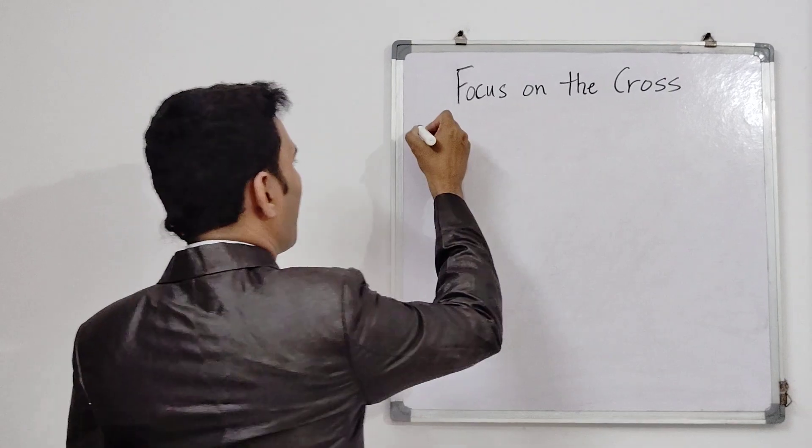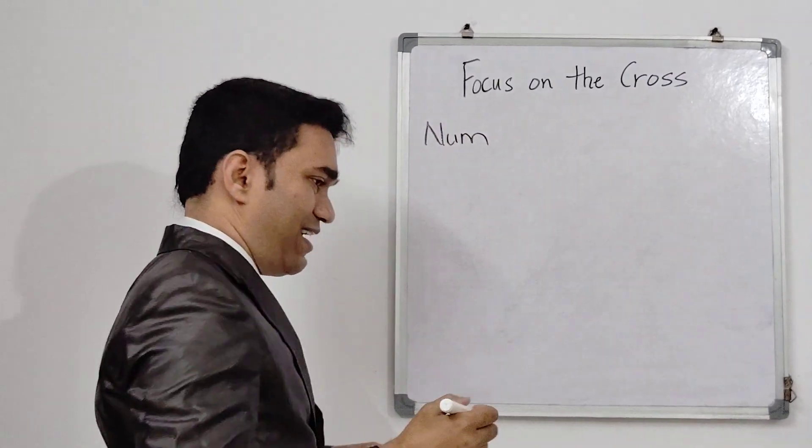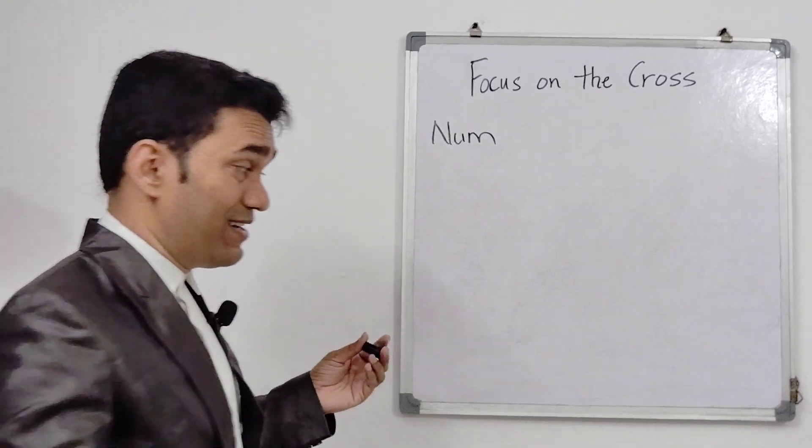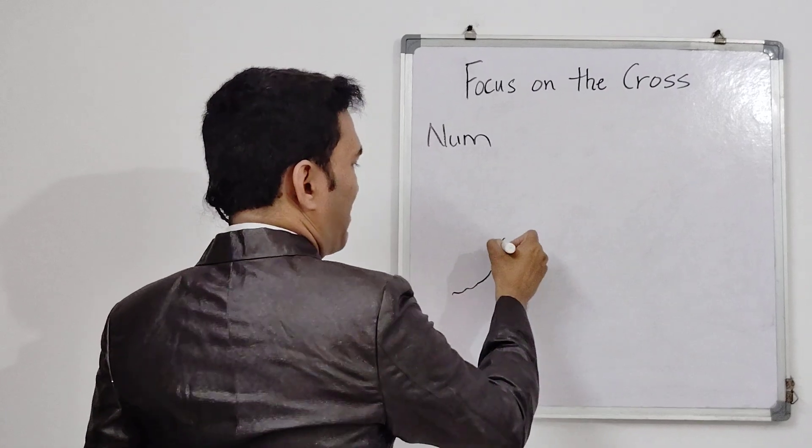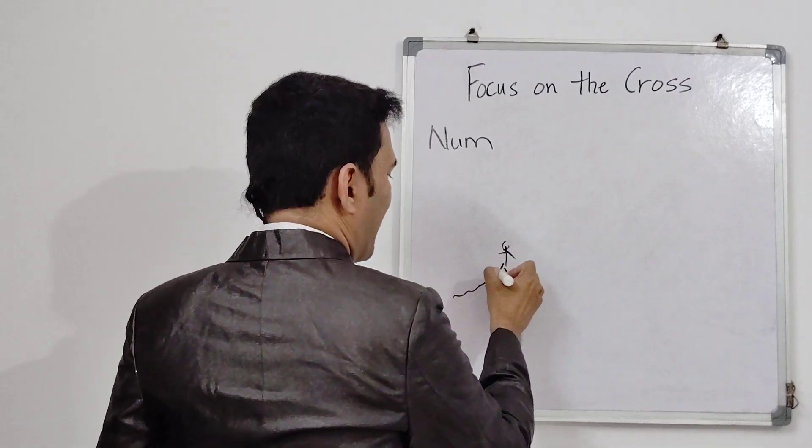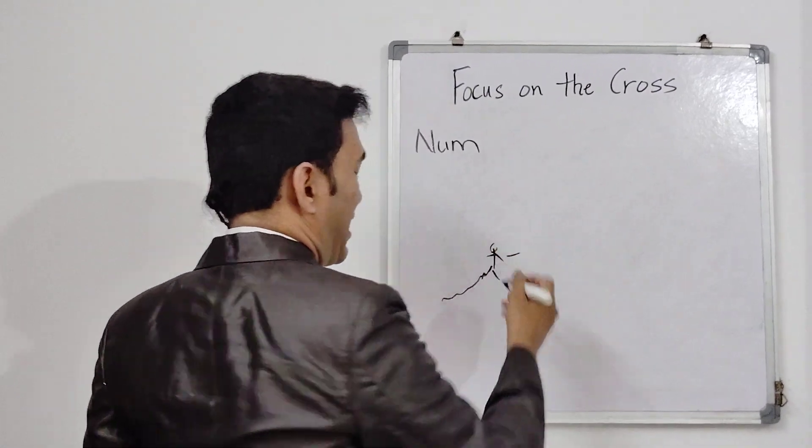We know in the book of Numbers, there was a time when the people of Israel sinned against the Lord. And then some serpents came and bit these people of Israel. So when the serpents bit these people, they all cried out to Moses and asked for help.